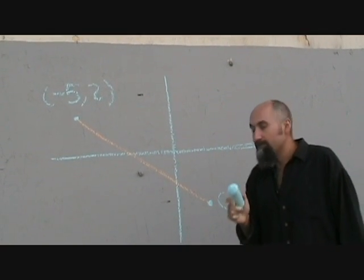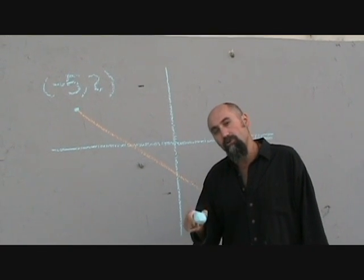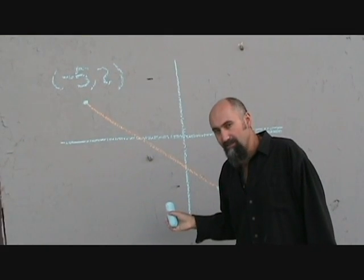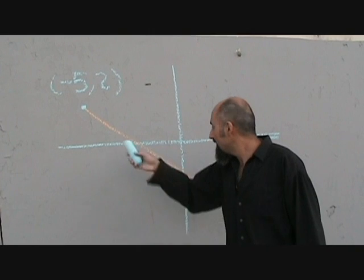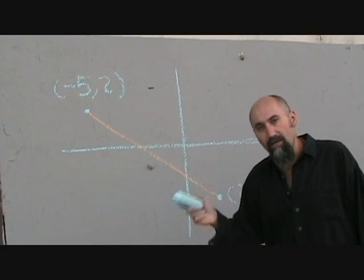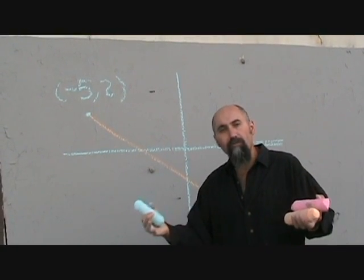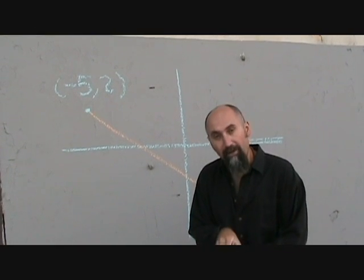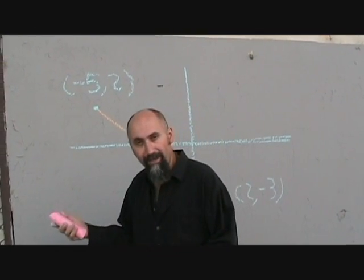The third most important thing they ask you to do with lines is to figure out what the distance between these two points is. The distance between these two points is derived from the Pythagorean theorem. The Pythagorean theorem, if you remember, is a right triangle.